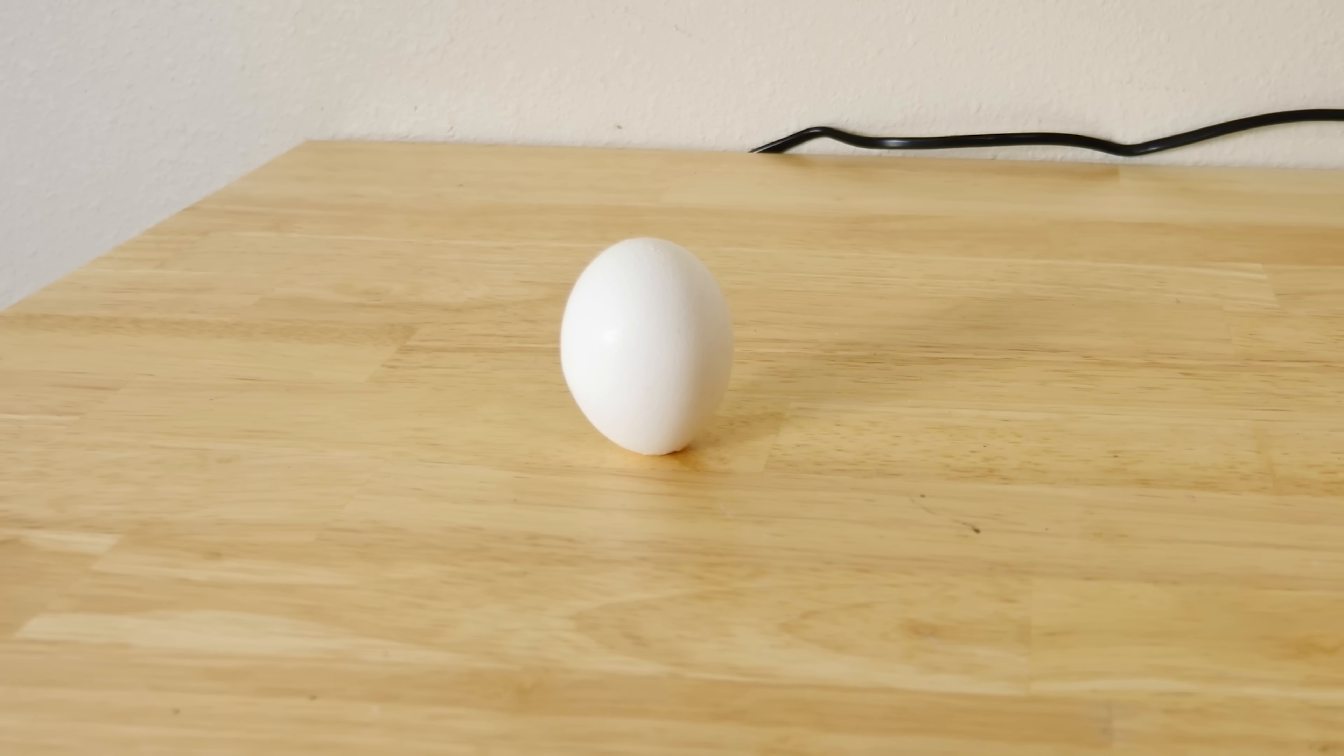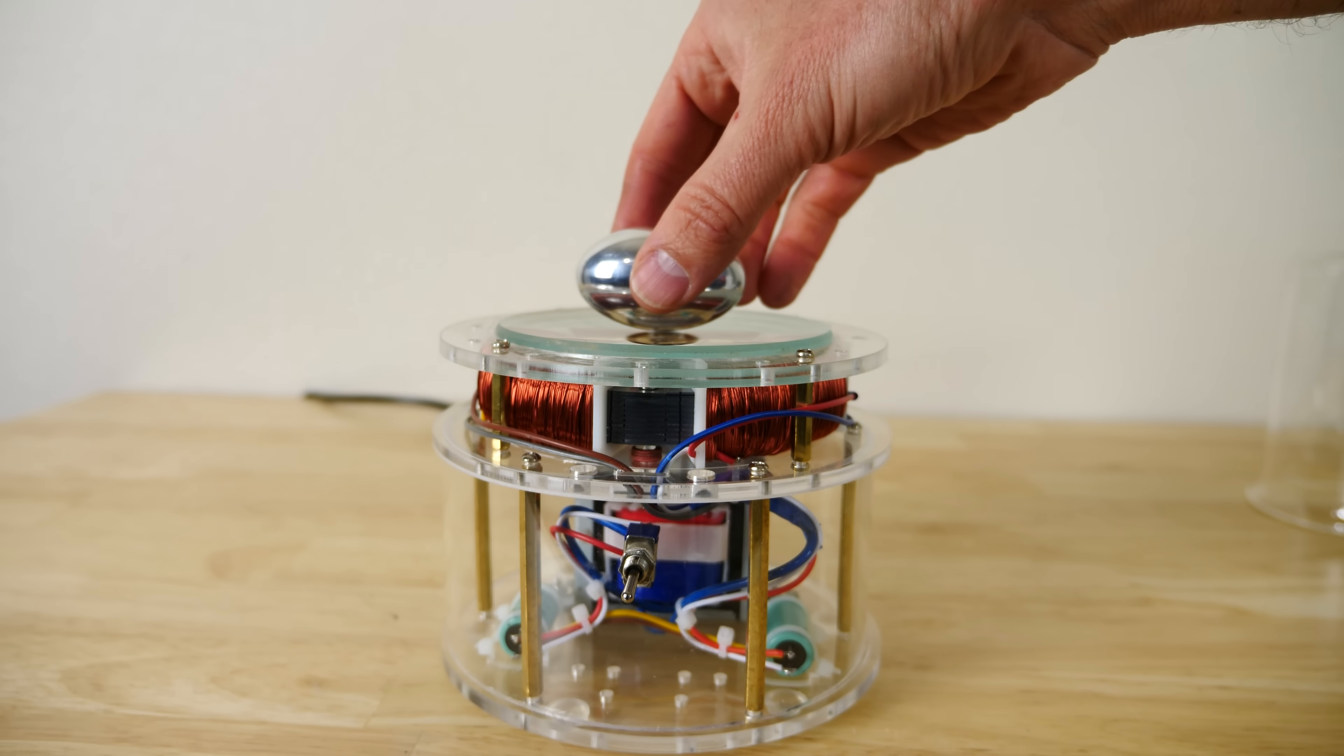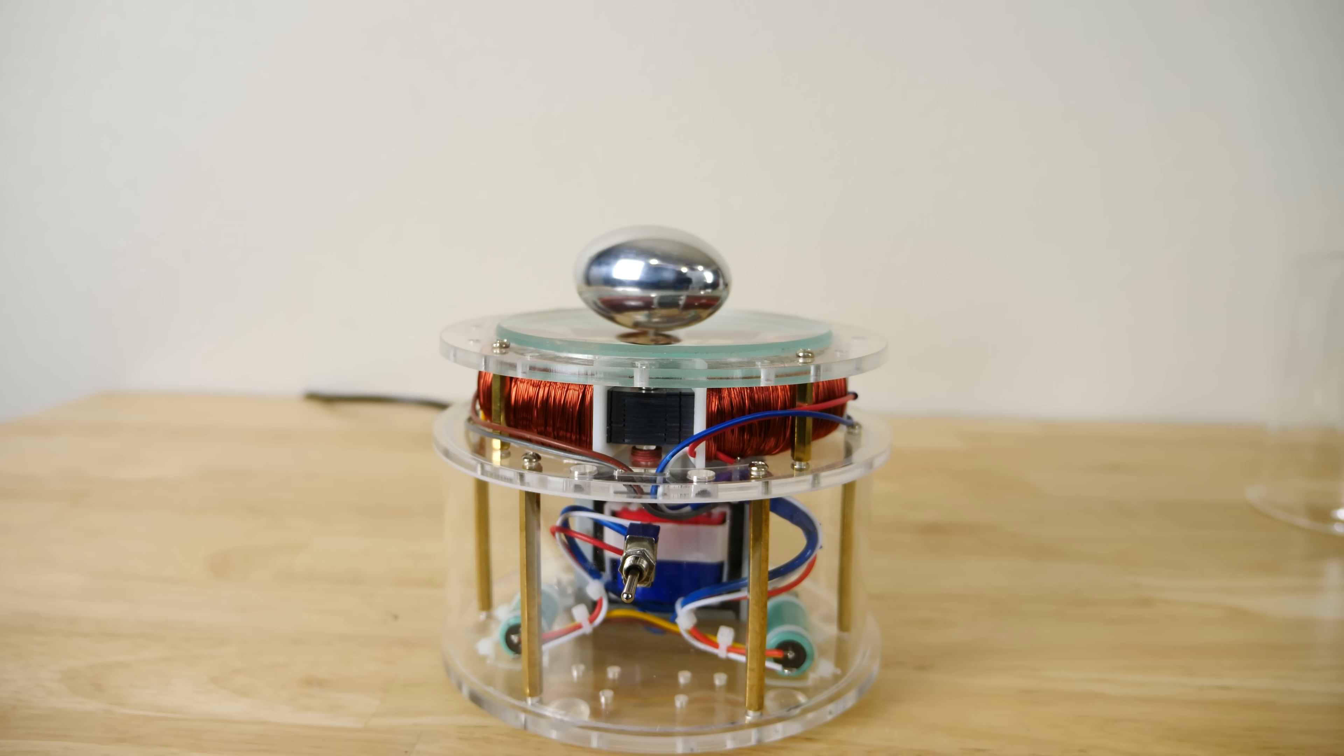But then Nikola Tesla came along and he wanted to one-up the story about the Christopher Columbus egg. So he made a device that can actually spin a metal egg. The way it's spinning it is it has four electromagnets that are alternating AC current in it. So the poles of the magnet are constantly changing back and forth between north and south. This generates an eddy current which has a magnetic field that opposes it so it spins it around in a circle really fast.